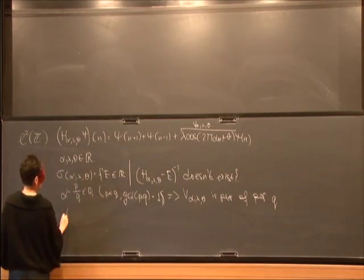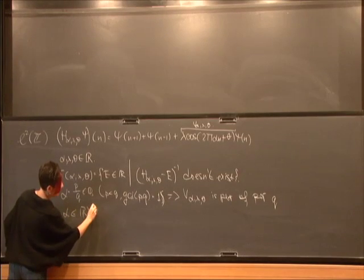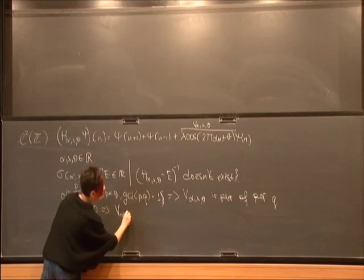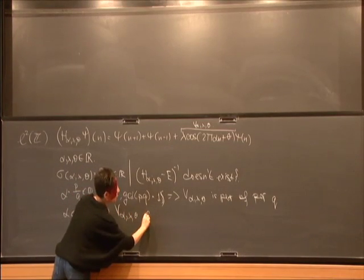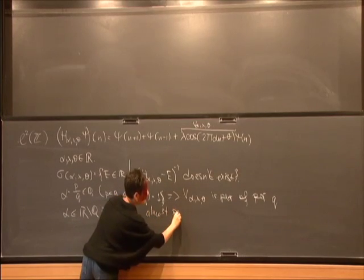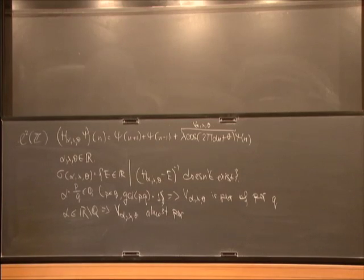And if α is an irrational number, then the sequence is almost periodic, which means roughly that if you're looking at some piece of the sequence, somewhere far enough we can find an almost the same piece.